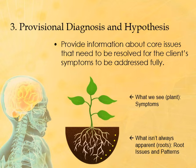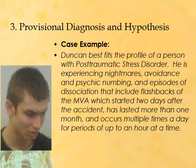Here's a case example. Duncan best fits the profile of a person with post-traumatic stress disorder — that's our provisional diagnosis. He is experiencing nightmares, avoidance and psychic numbing, and episodes of dissociation including flashbacks of the motor vehicle accident, which started two days after the accident, has lasted more than one month, and occurs multiple times a day for periods of up to an hour at a time. Notice we stress the timeline of symptoms — how often they occur, how many times per day, and how long they last — because diagnostic criteria in the DSM often include timelines. For example, major depressive disorder requires two weeks of symptoms.